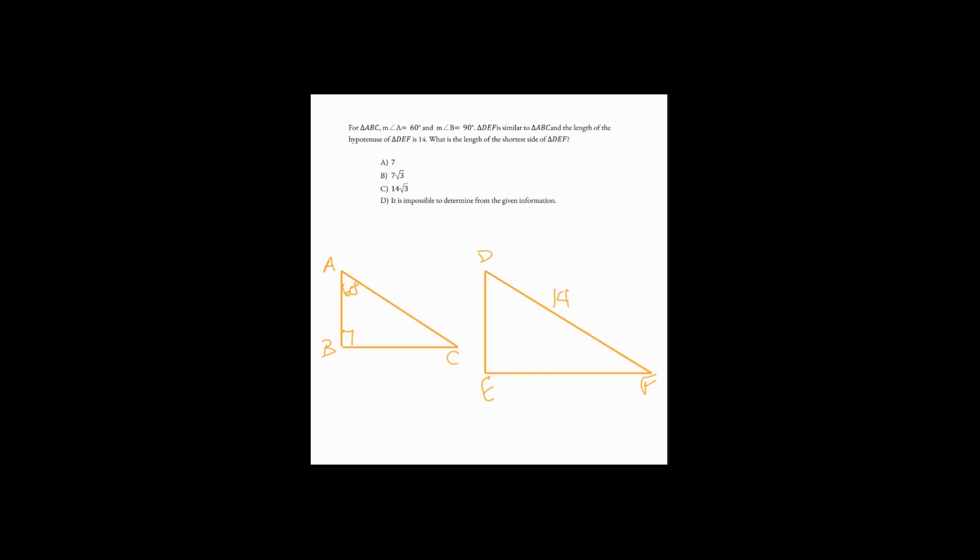As we look at the choices, we notice that we have a couple of different options. A couple of them have a square root of three. One does not. And then we've got the possibility that there's not enough information, which is sometimes the right answer to a CLT question. But we need to really mine the information and dig in here to see if there is in fact enough information.